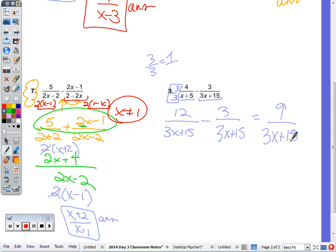Keep the denominator, because they are the same. And then I need to simplify. What do you notice about all the numbers 9, 3, and 15? They're all divisible by 3. So you can divide out the 3, or you can factor.